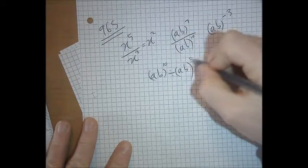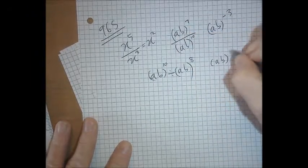it works just the same. If that was a 10 and that was an 8, it would be (a b) in brackets to the power of 2.